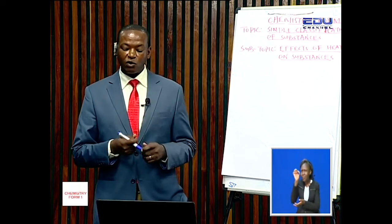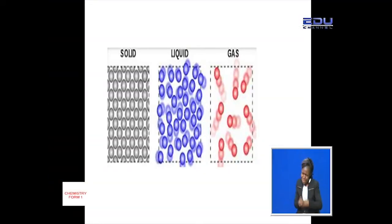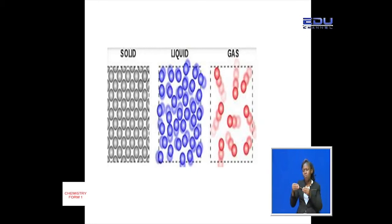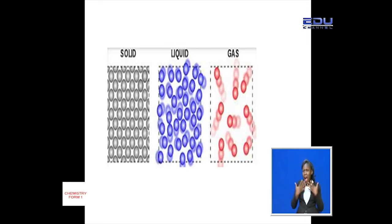In the second one — the liquid — the particles are far apart from each other, and therefore they can be able to move from one point to the other. But their movement is not comparable to gases. The gases are far away from each other, meaning they can be able to move in a continuous random motion.